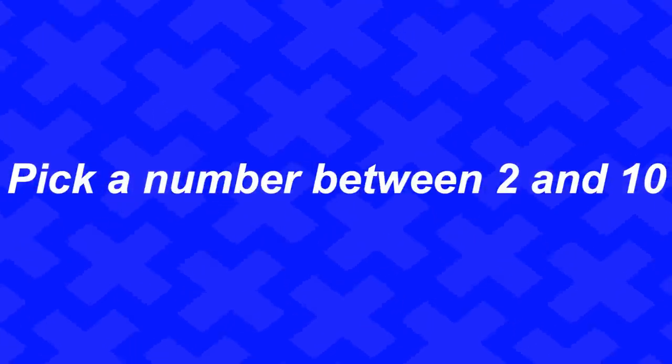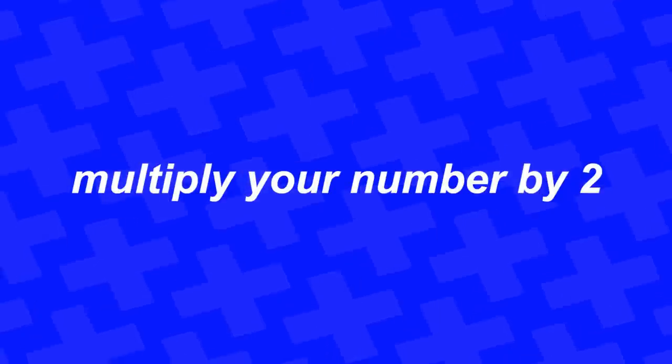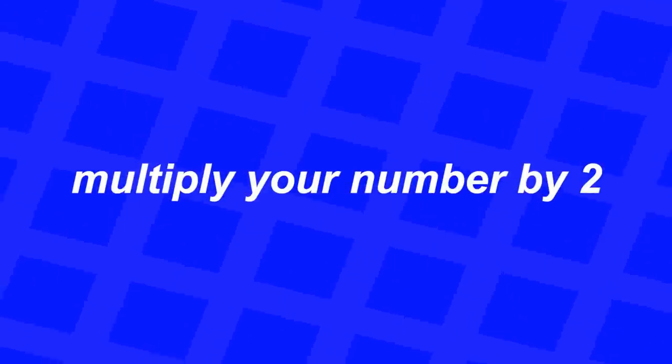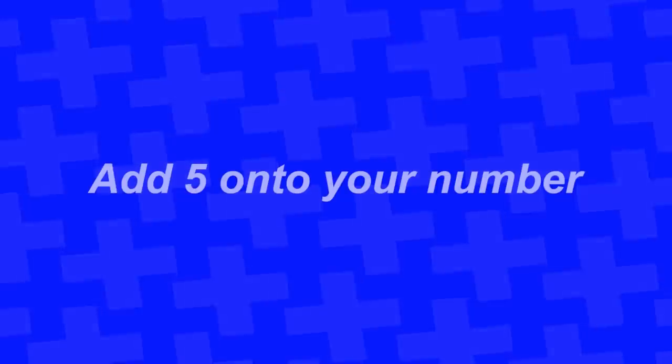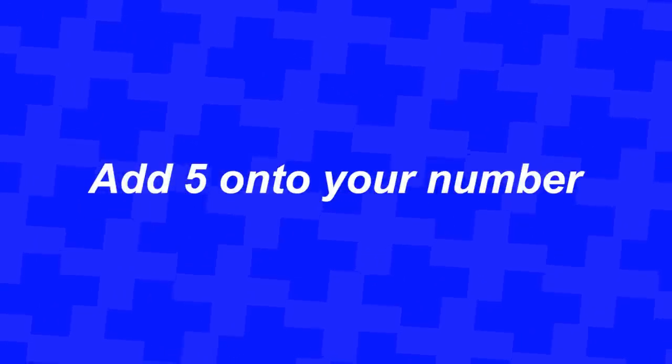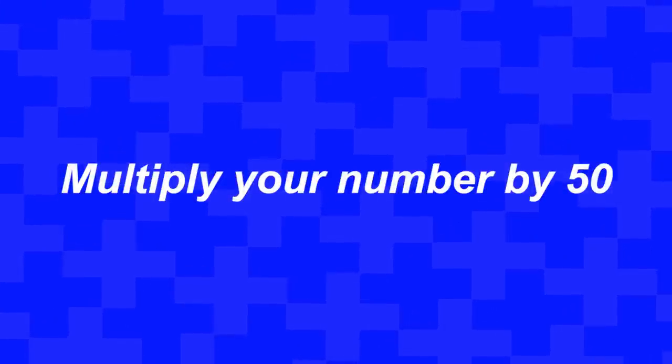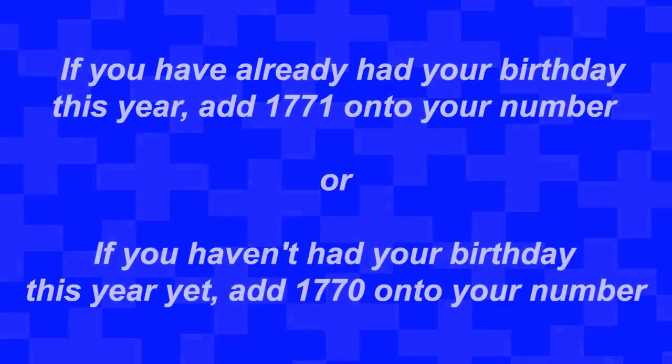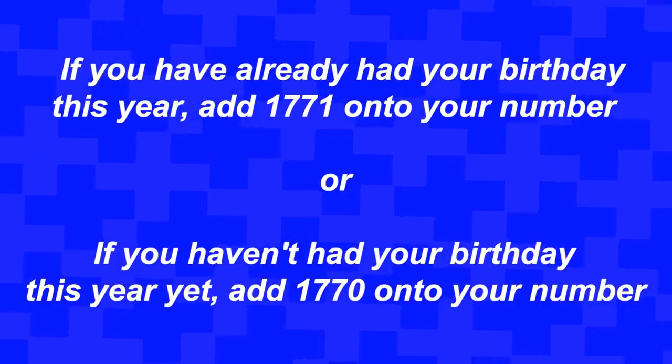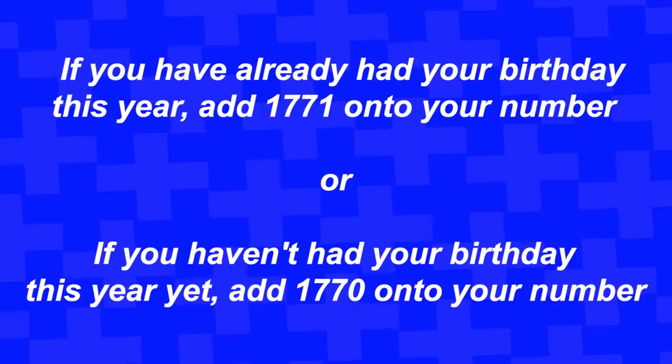First, I want you to pick a number between two and ten. Now, I want you to multiply your number by two. Next, add five onto your number. Now, I want you to multiply your number by 50. Alright, so if you've already had your birthday this year in 2021, I want you to add 1771 onto your number. If you haven't had your birthday this year in 2021, I want you to add 1770 onto your number.